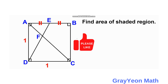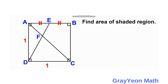A line is also drawn from C to the midpoint of AB, which is E. These two segments meet inside the square at point F. Calculate the area of triangle FCD.